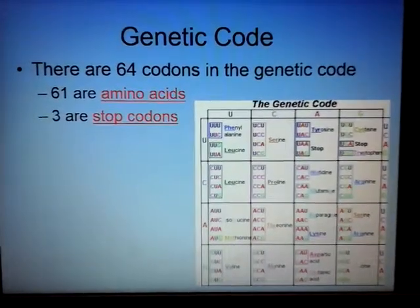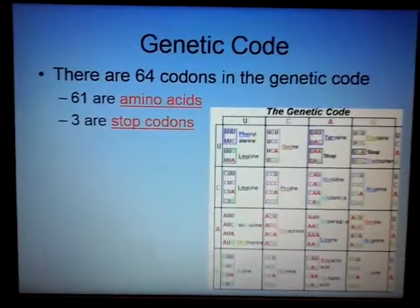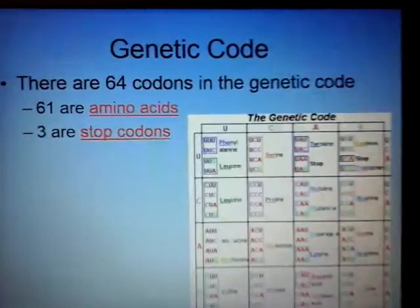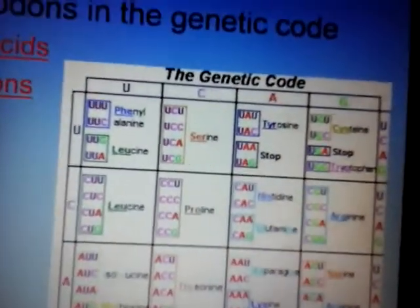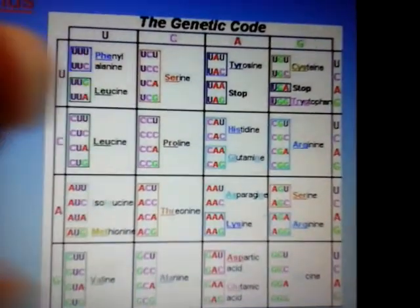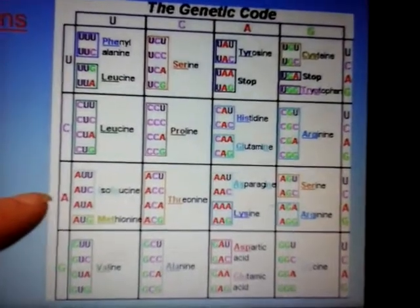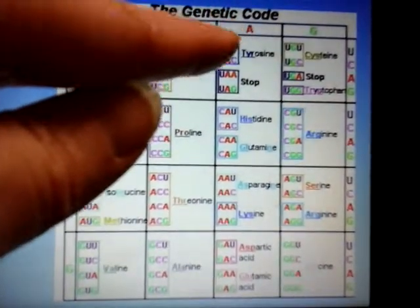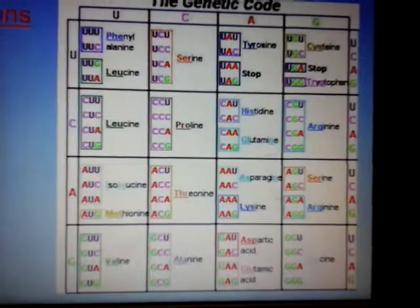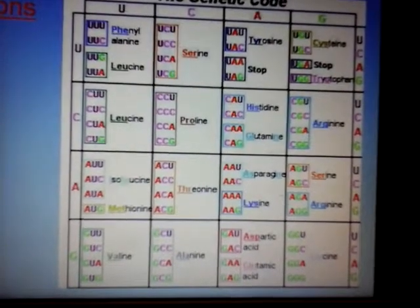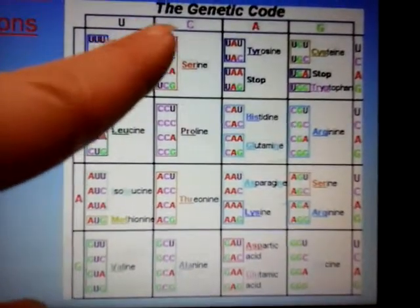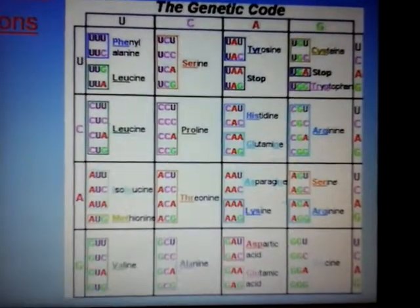We've figured out what the genetic code means and arranged it in a chart. If you have AAA, you find A on one side, then A on the top, and they come together — that amino acid is lysine. When your body sees AAA, it knows it needs that ingredient. When it sees CCC, that means the amino acid proline.